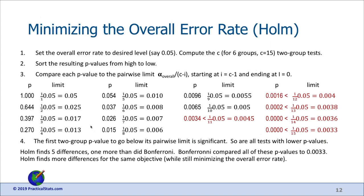A newer procedure, the Holm adjustment, has been standard until recently and is probably the most commonly used. For parametric approaches, Tukey's method does adjusted t-tests. The Holm adjustment is an improvement over Bonferroni and can be used for either parametric or non-parametric methods.